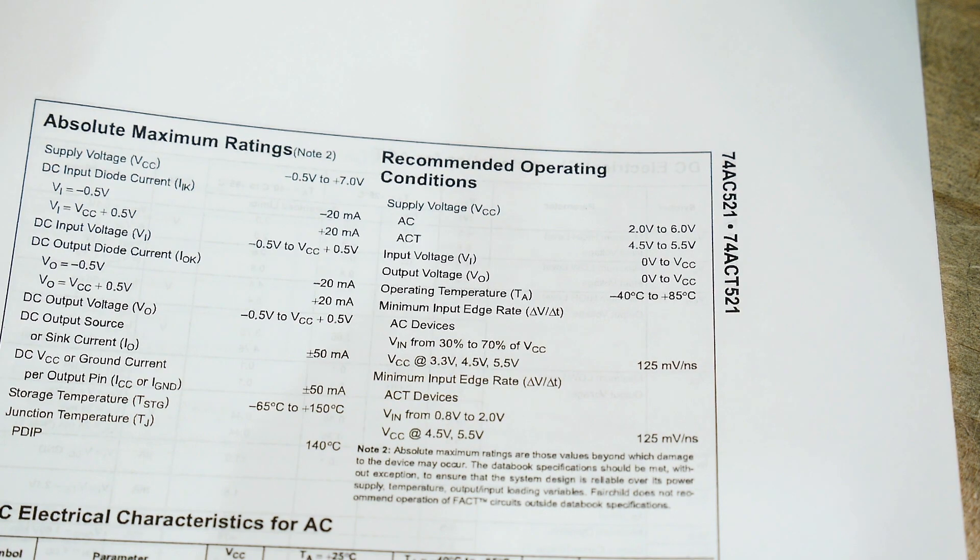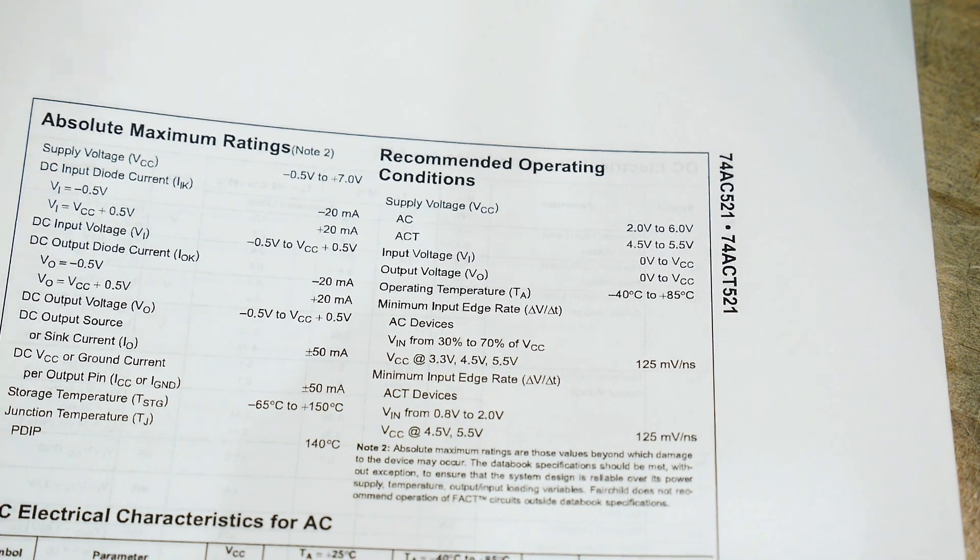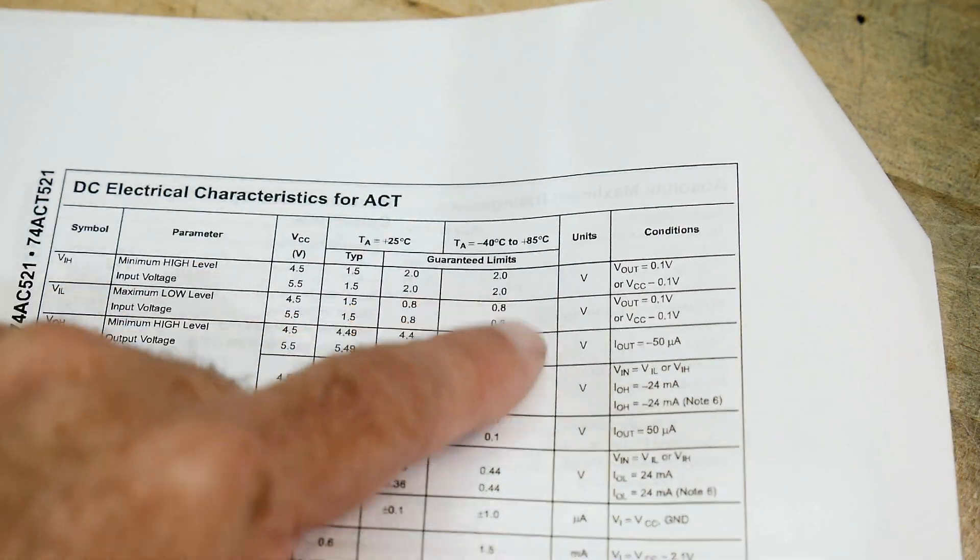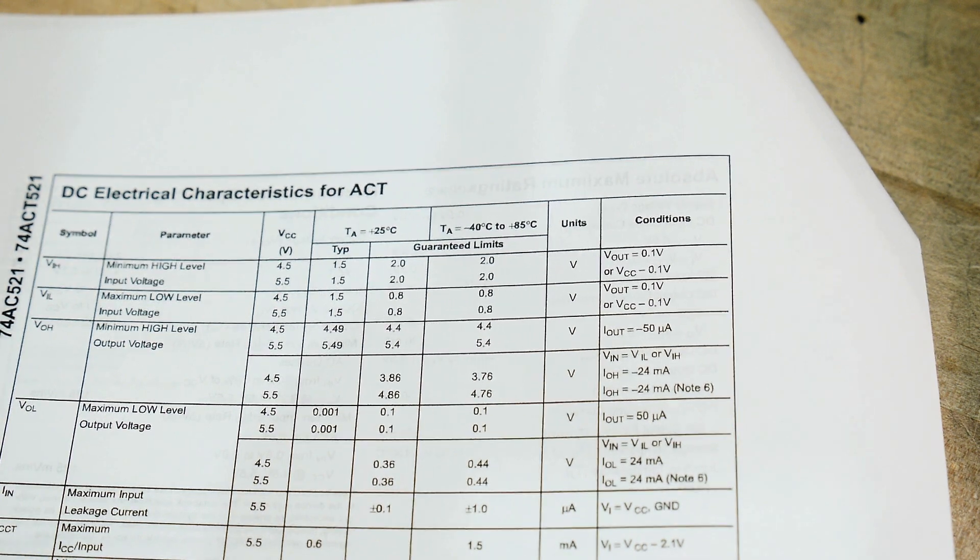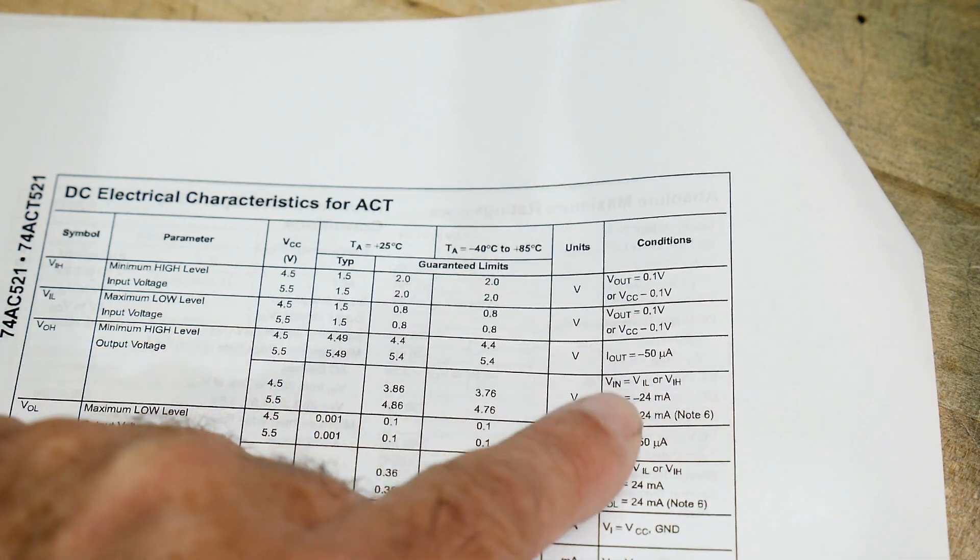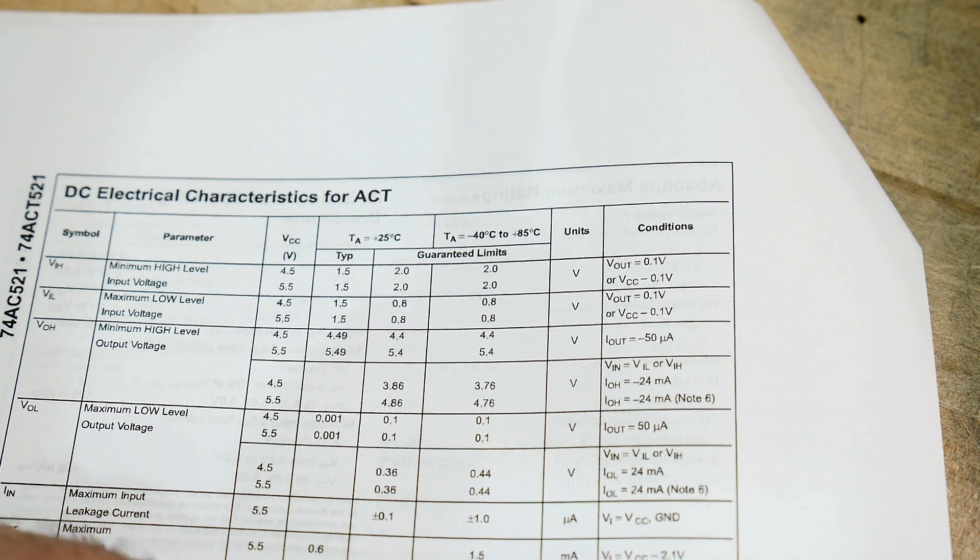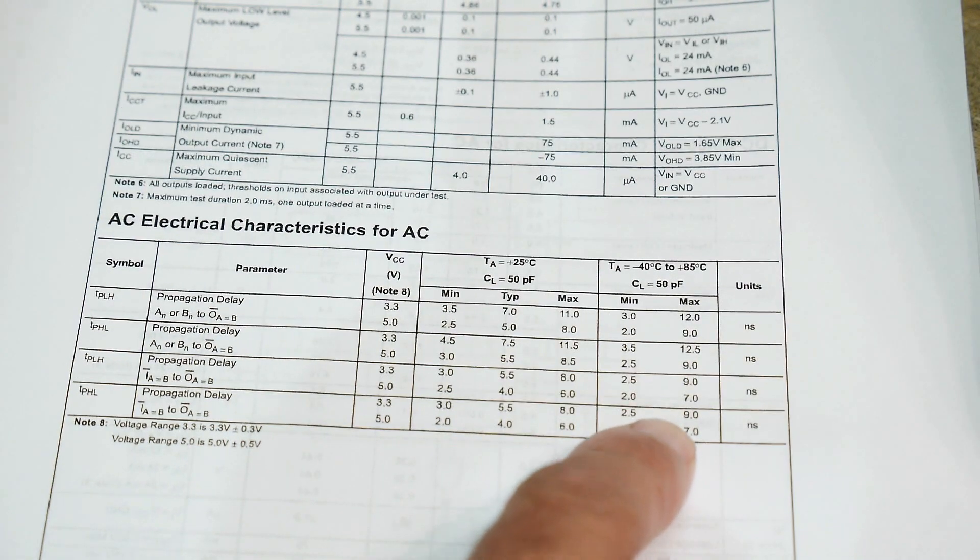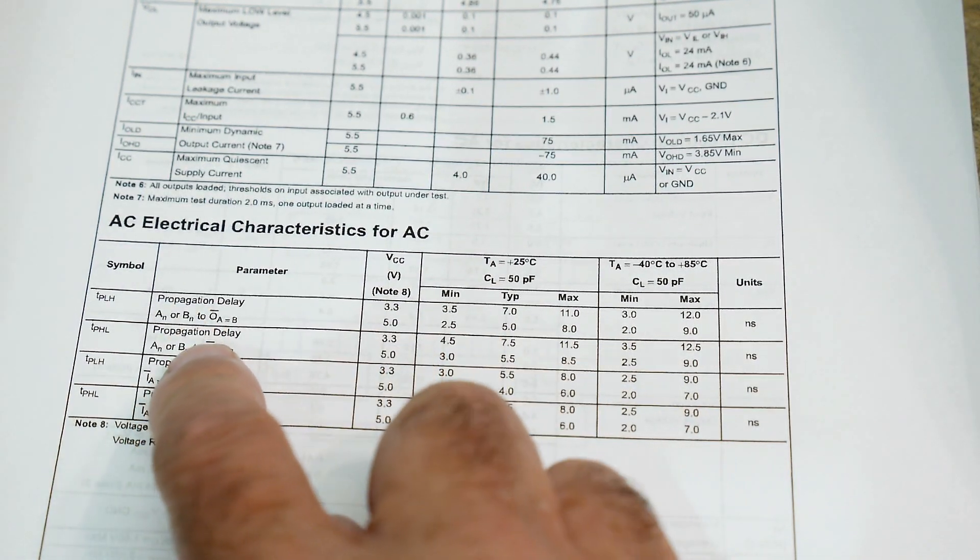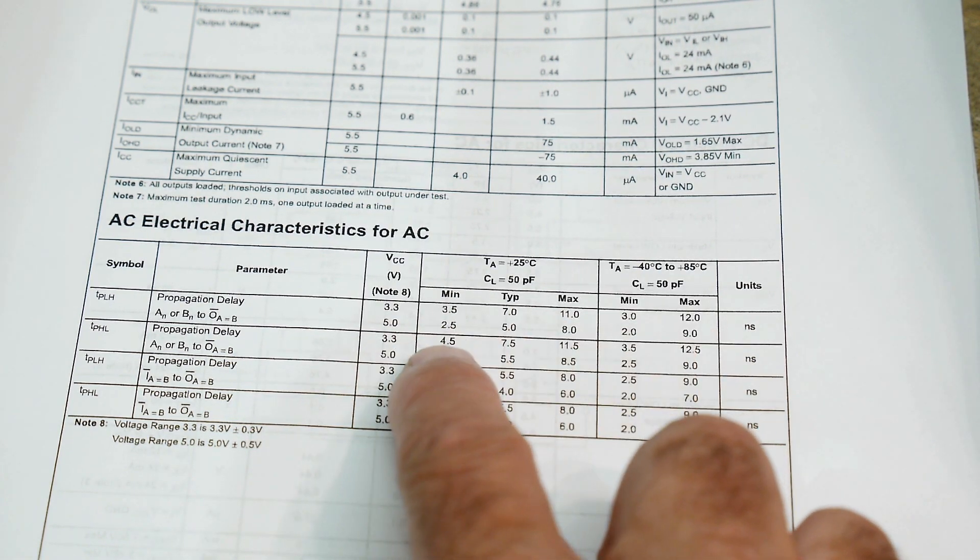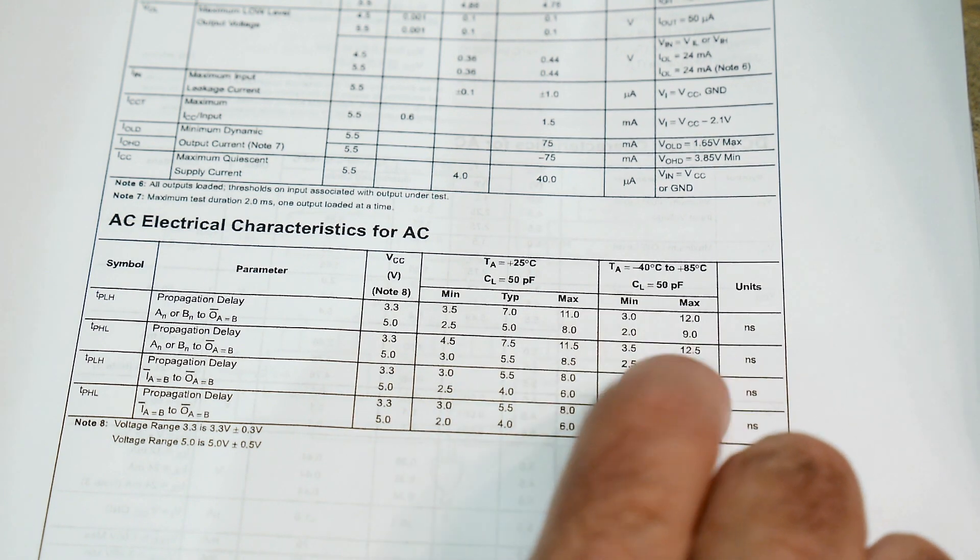Does it say how fast it goes? I don't see any mentions of speed yet. Let's see, characteristics, here's nanoseconds. I guess this is about all we get. So propagation delay, somewhere between five volts logic, anywhere between two and nine nanoseconds. Pretty fast part.